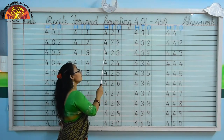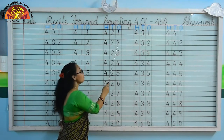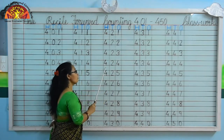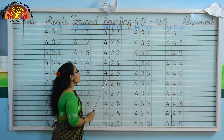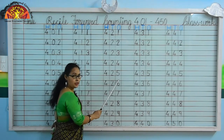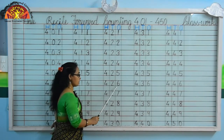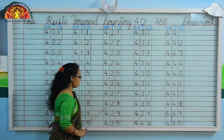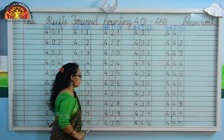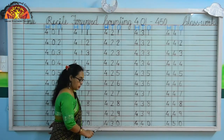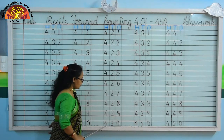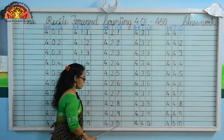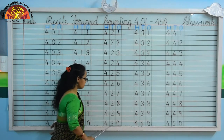Now, 422, 423, 424, 425, 426, 427, 428, 429, 430.